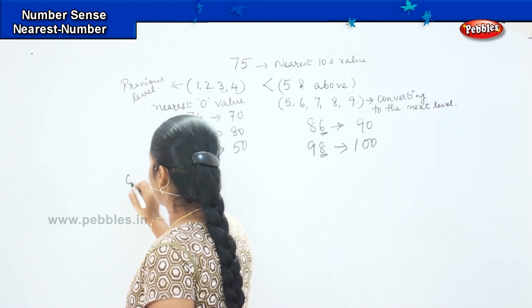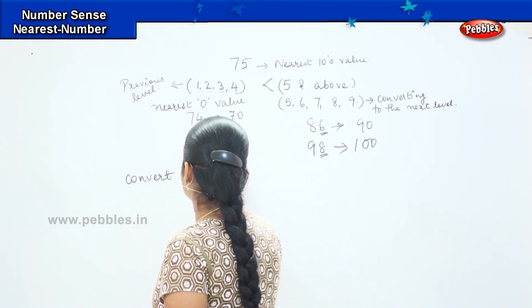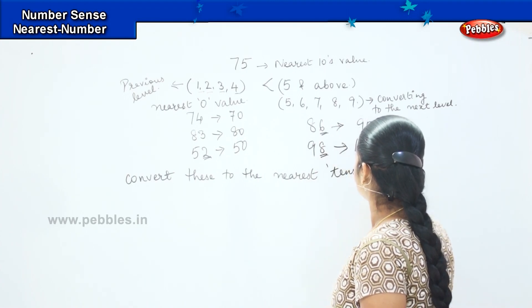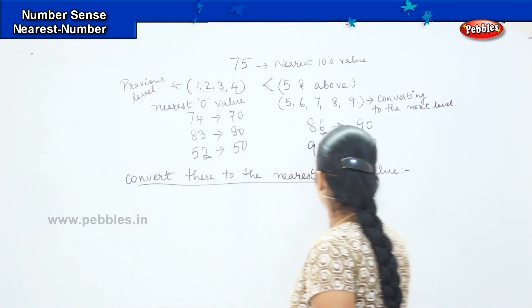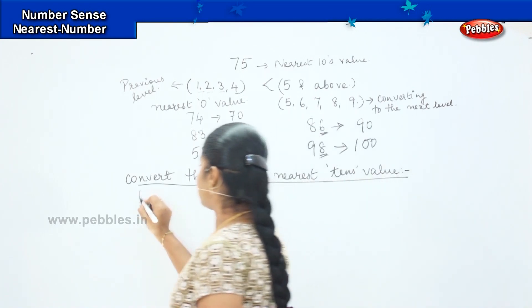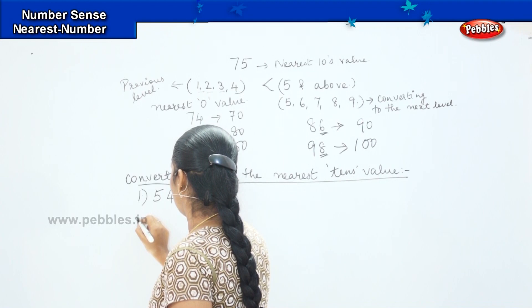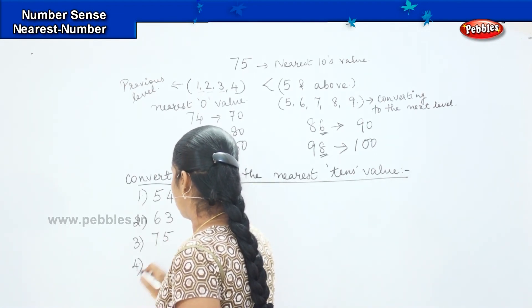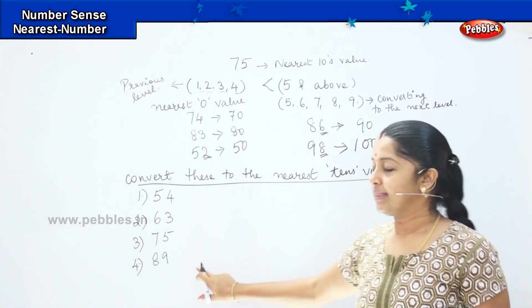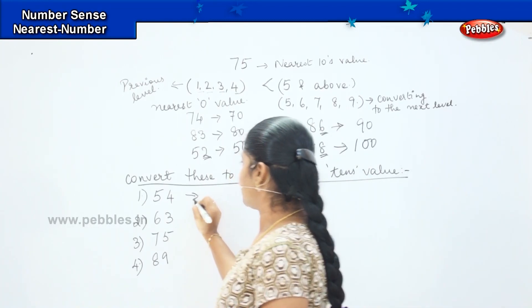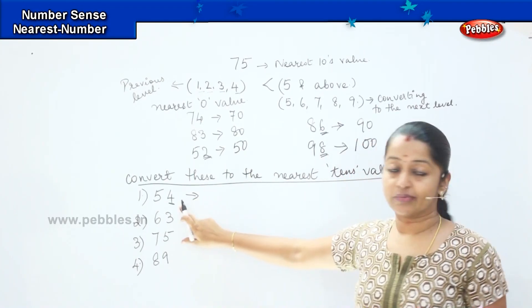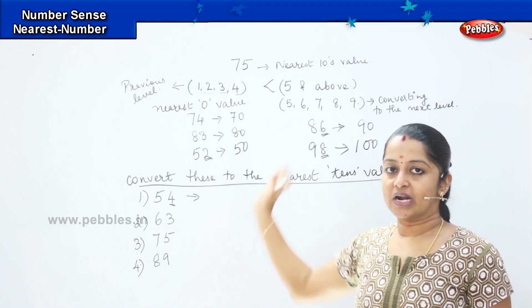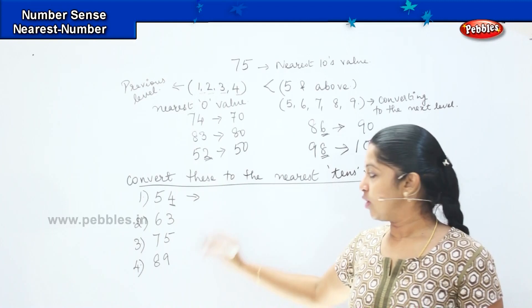Now I have a question. Convert these numbers to the nearest tens value. The first number is 54. The value in the ones place is 4. Is it greater than 5 or less than 5? It is less than 5, so we convert it to the previous tens value. The nearest tens value will be 50.